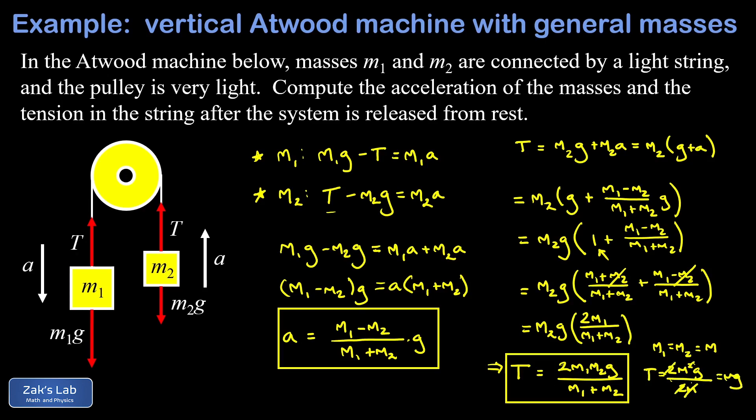Like I should if the Atwood machine is balanced. So that's it for the solution of the general vertical Atwood machine. Now that we have these formulas we could just plug in whatever mass numbers we want.